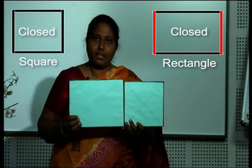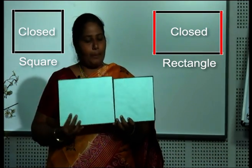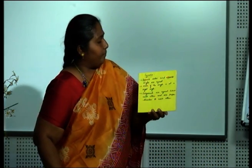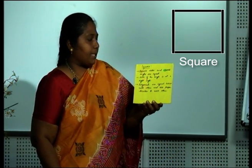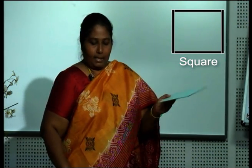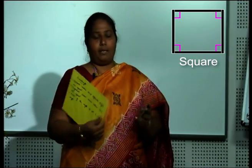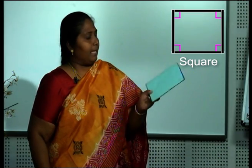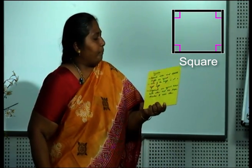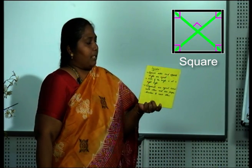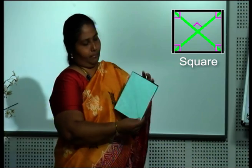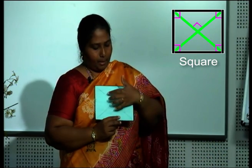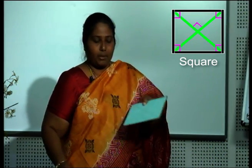Both of them are closed figures and both of them are four-sided figures. You can see the properties of each figure being written. Now, in a square, opposite sides and opposite angles are equal. In both a rectangle and a square, you have angles at 90 degrees — each of the angles is at a right angle. Diagonals are equal in length, they are perpendicular to each other, and they bisect each other. This is about a square.